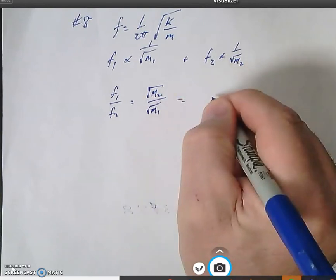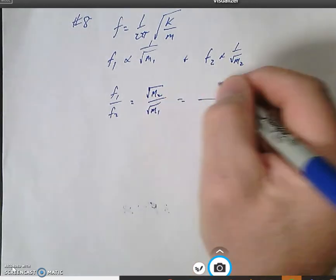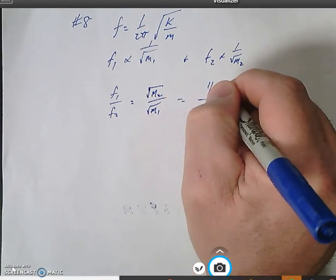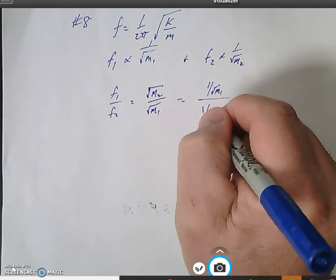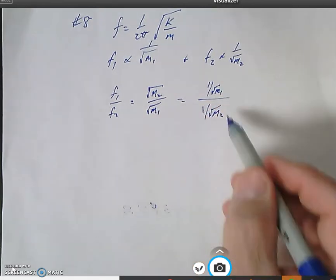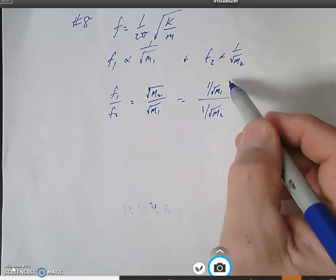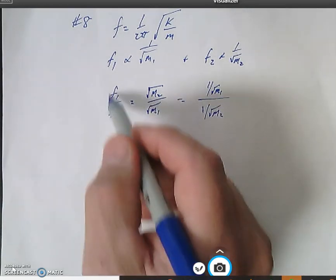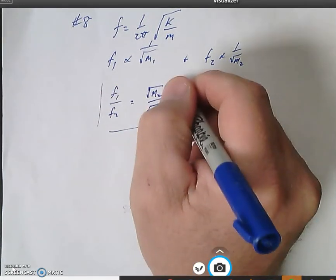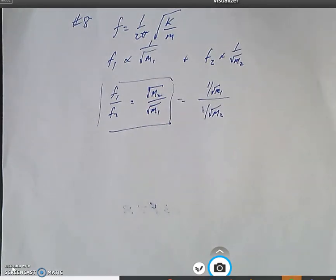Because in reality, where did that come from? That came from up top, I'd have one over the square root of m1, and down below I'd have one over the square root of m2. You drop the m1 down, invert and bring the m2 up, and this is what I end up with right here. So question 8 is asking for